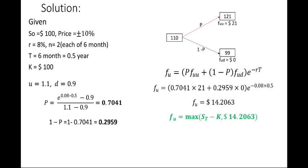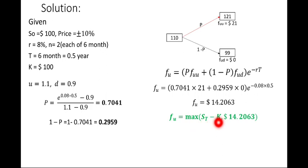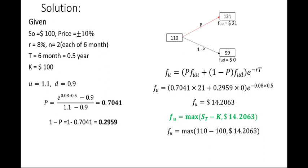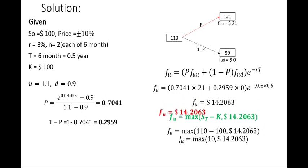Since a call option is exercised when S_T > K, and here S_T = 110 and K = 100, the exercise value is 110 − 100 = 10. The theoretical value is 14.2063. For an American option, we take the maximum of the exercise value or the theoretical value: max(10, 14.2063) = 14.2063.